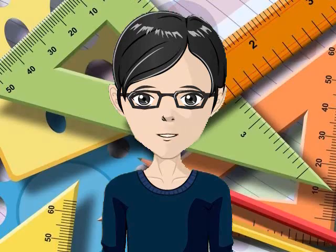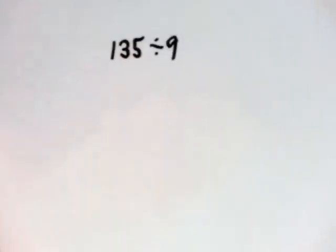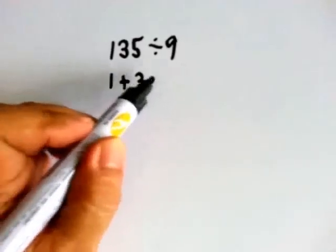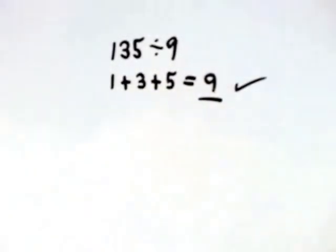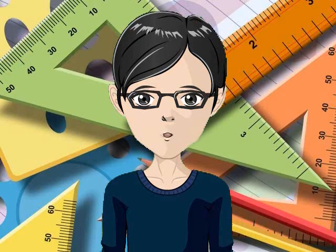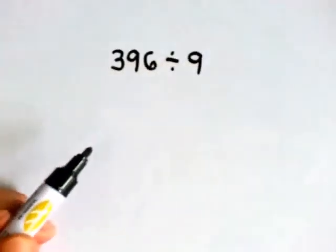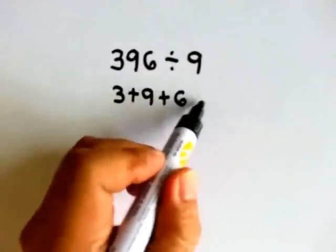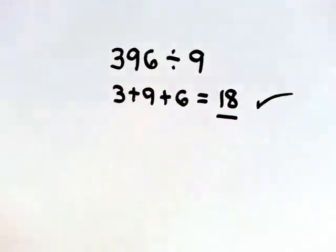Kapareho lang yan ng divisible by 3. Is 135 divisible by 9? We add the digits: 1 plus 3 plus 5 equals 9. 9 is in the multiplication table of 9. So 135 is divisible by 9. Di ba mas madali yun kaysa mag-divide tayo by 9? Another example: is 396 divisible by 9? Again, we add the digits: 3 plus 9 plus 6 equals 18. 18 is in the multiplication table of 9. So 396 is divisible by 9.